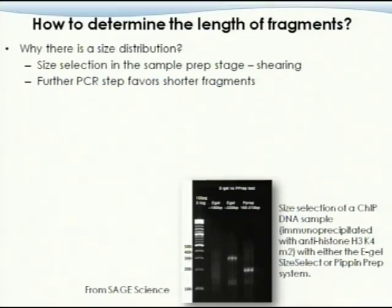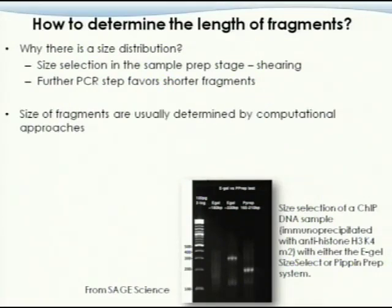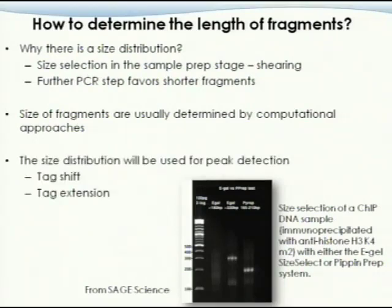But the size is not only controlled by sonication — further PCR steps favor shorter fragments. So if you initially think your fragments are about 300 base pairs, after PCR steps you will end up favoring the shorter DNA fragments. These are really hard to evaluate just from a gel picture. Therefore, the size of these DNA fragments is usually determined by computational approaches.